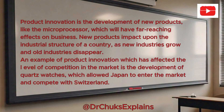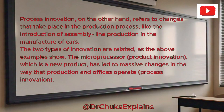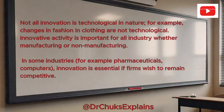Another example of product innovation which has affected the level of competition in the market is the development of quartz watches, which allowed Japan to enter the market and compete with Switzerland. Process innovation, on the other hand, refers to changes that take place in the production process, like the introduction of assembly line production in the manufacture of cars. The two types of innovation are related, as the above examples show. The microprocessor — product innovation — has led to massive changes in the way that production and offices operate — process innovation. Not all innovation is technological in nature; for example, changes in fashion and clothing are not technological.